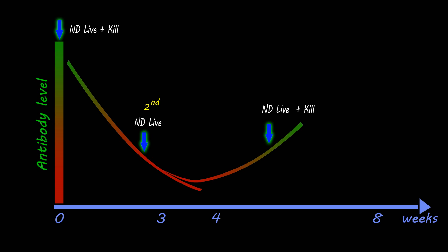In the fifth week, the third vaccination is done using live vaccine and killed vaccine to protect chickens until before adulthood.